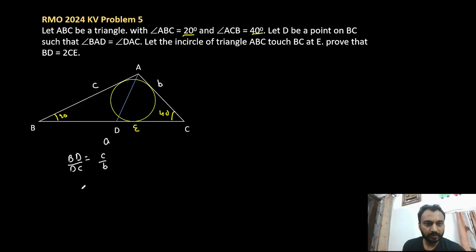So what we can say is that BD length is c over c plus b times BC which is a. So ac by b plus c. So that is the length of BD.